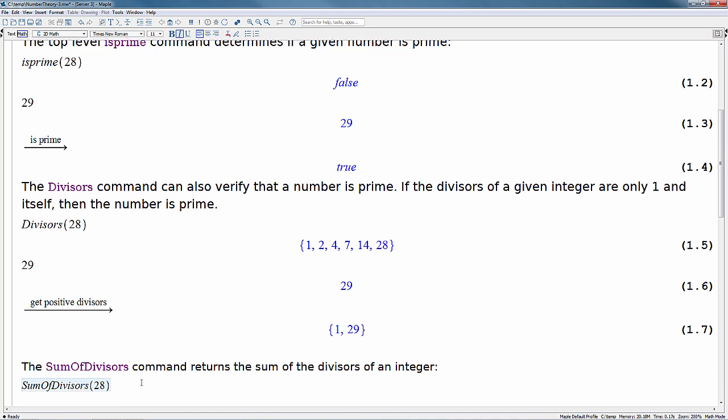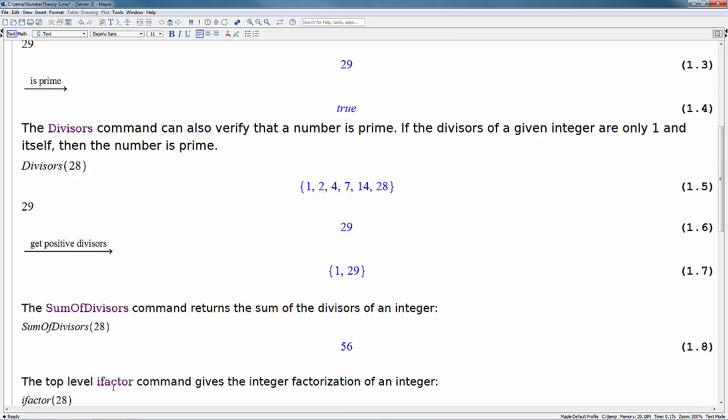So let's do some more examples. The sum of divisors command returns the sum of divisors for an integer. So in the case of 28, this is simply just going to sum up these values here. So sum of divisors is 56.